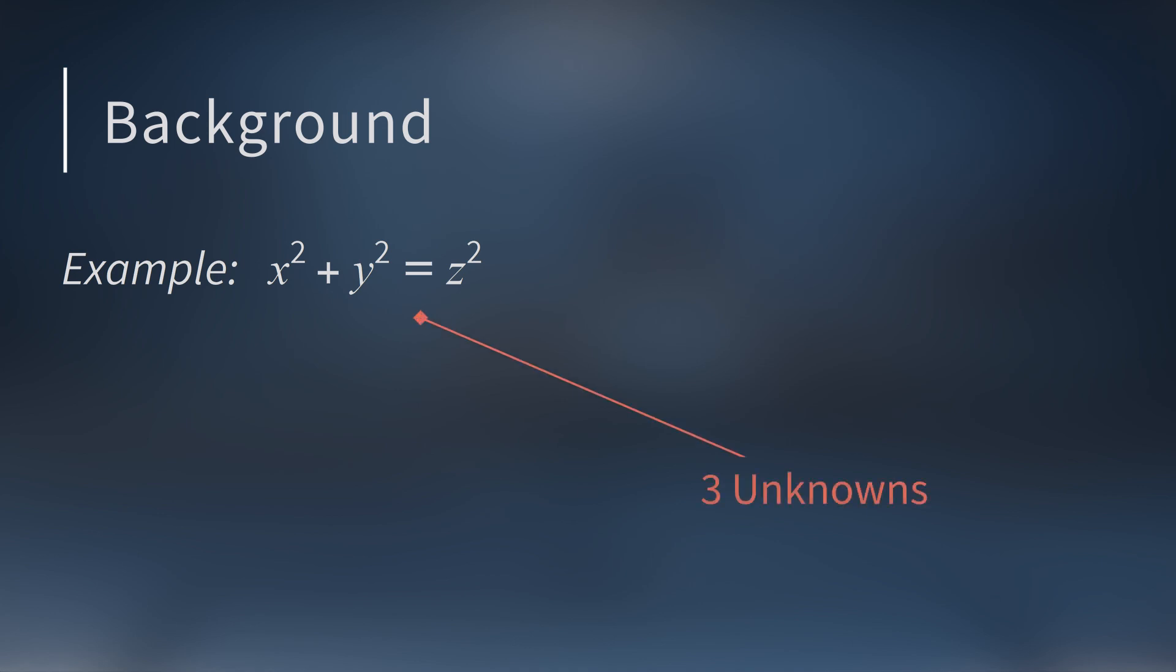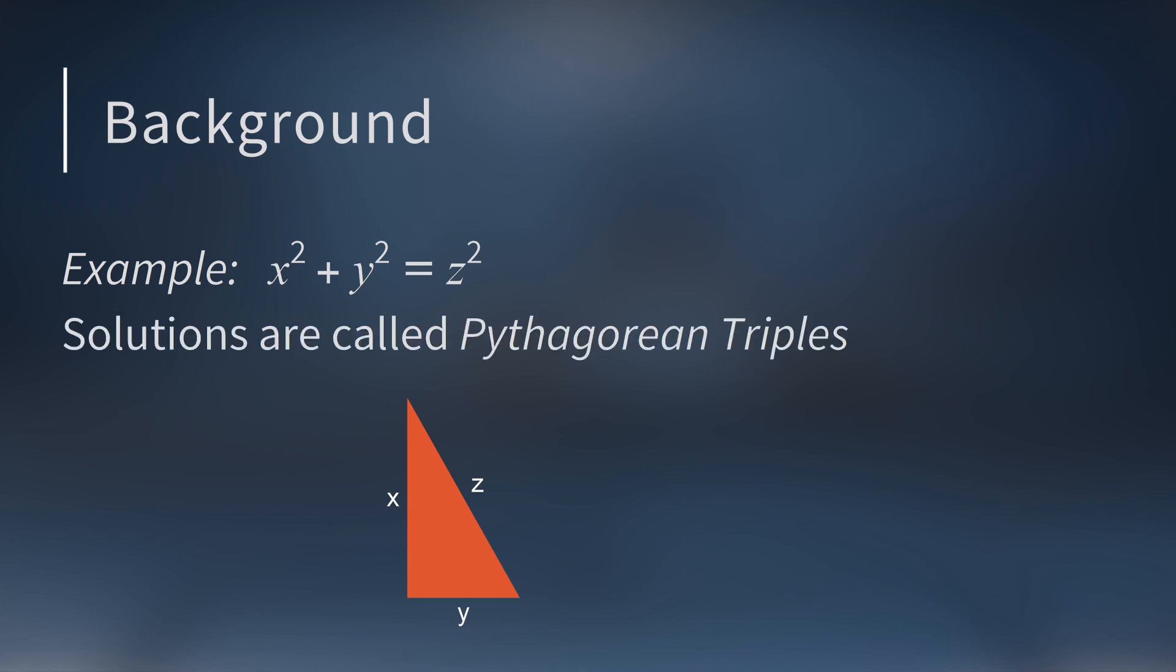One famous example is the Diophantine equation x squared plus y squared equals z squared. This is a Diophantine equation with three unknowns: x, y, and z. For positive integers, this is just the Pythagorean theorem. Each solution where all the numbers are positive forms the sides of a right triangle.